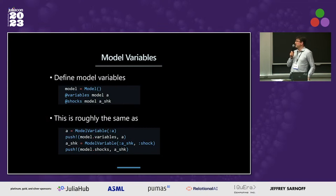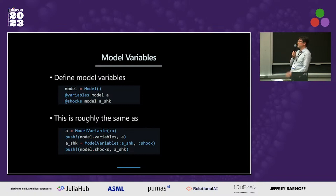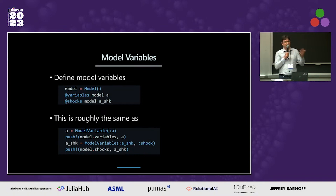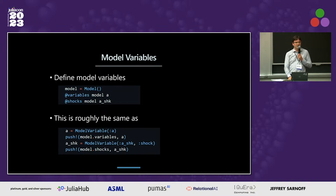When we start with the economic model, the model is empty and we just add variables. Model variables are not really Julia variables, so we can use very simple macros to declare variables in the model. If you had to do it with the standard API, you'd have to know how to create instances of model variables in different ways for different types, and how to properly insert them into the model — programming details that economists don't need to worry about.